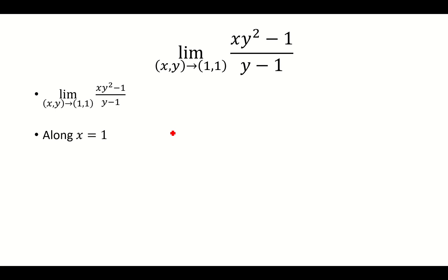So let's go along the path x equals 1. That leaves us with y squared minus 1 over y minus 1. And here we're approaching it as y approaches 1.